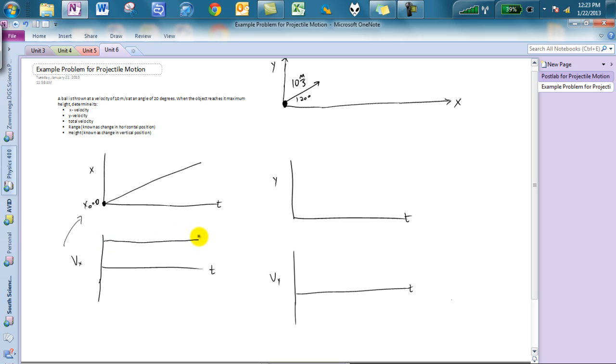My y versus t graph should look something like this. Again, notice that my initial position in the y direction is equal to zero, and so I'm going to start at zero. I'm going to have this ball go up, and it would come back down like so.